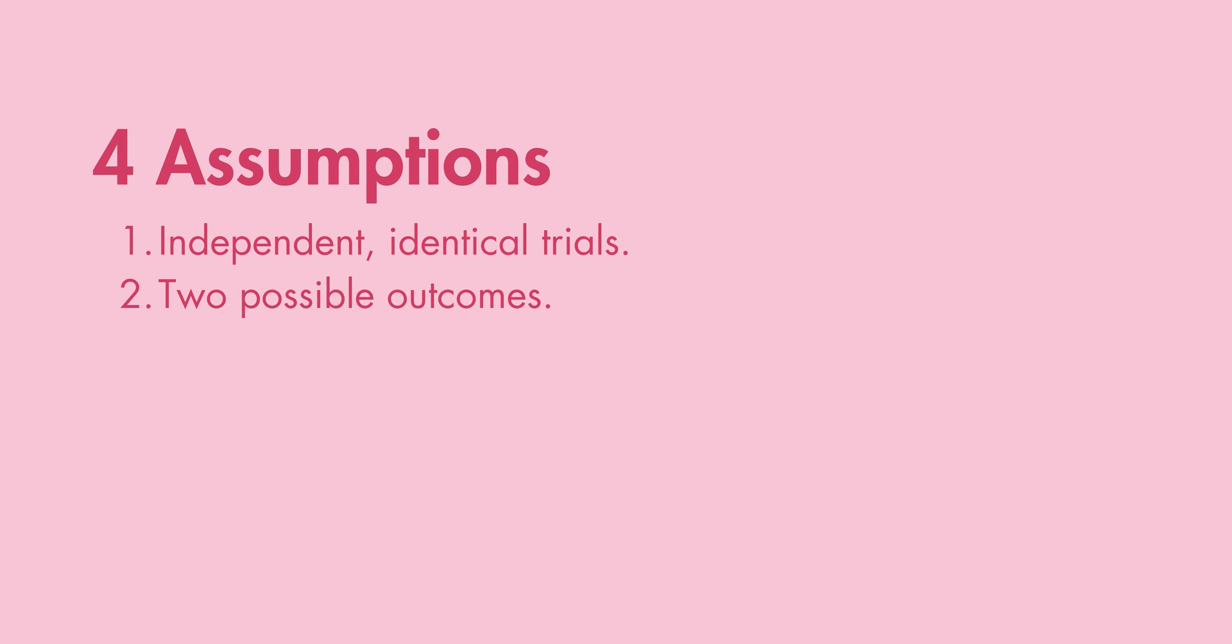Number two: each trial has only two possible outcomes - success, aka successful RIS, or failure. So, whatever you've been doing. These outcomes are mutually exclusive and exhaustive. Number three: there are a fixed number of trials. Let's call these n. So far, you've had 10 trials, so n equals 10.